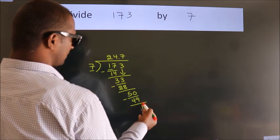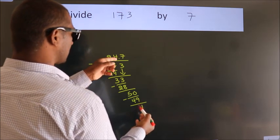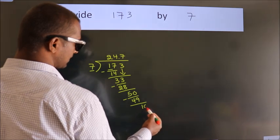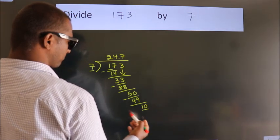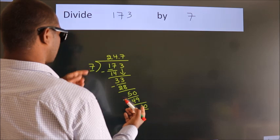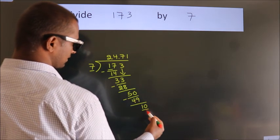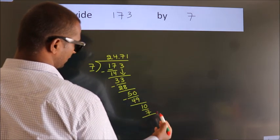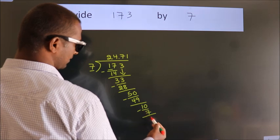After this, we already have the decimal, so directly take 0. So 10. A number close to 10 in the 7 table is 7 ones, 7. Now we subtract. We get 3.